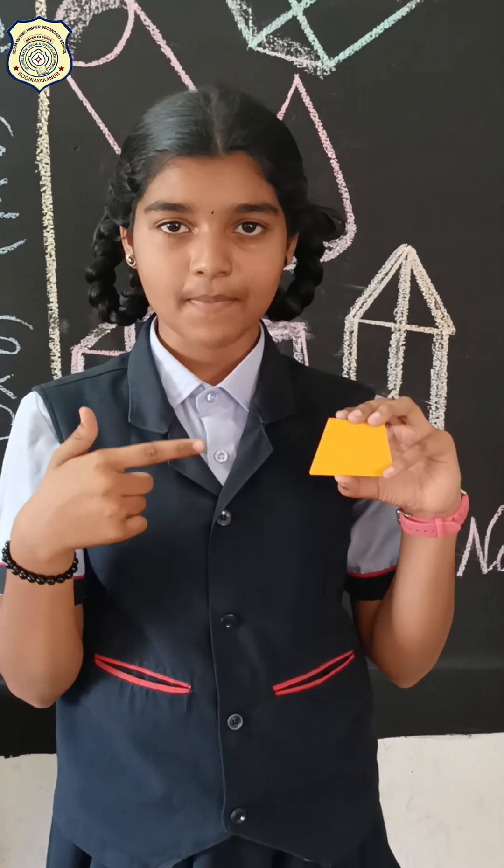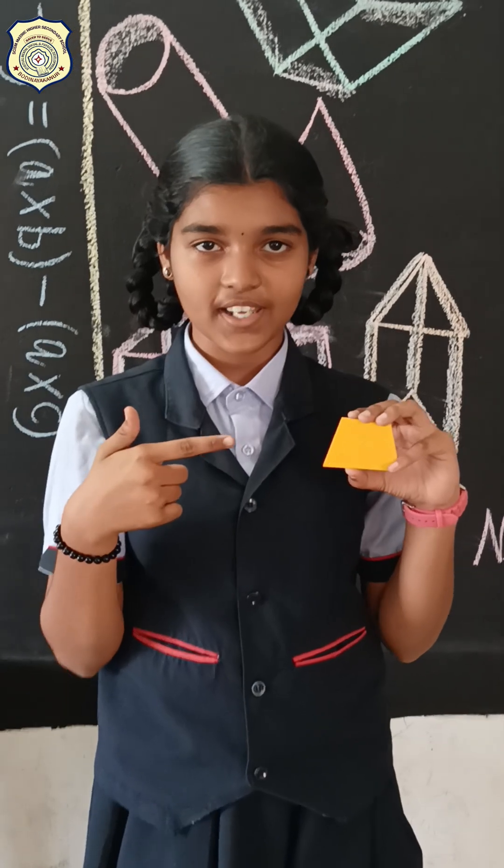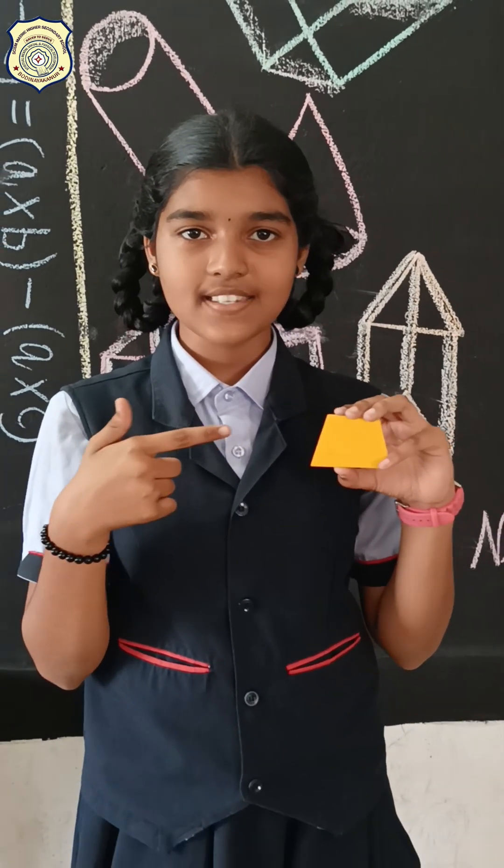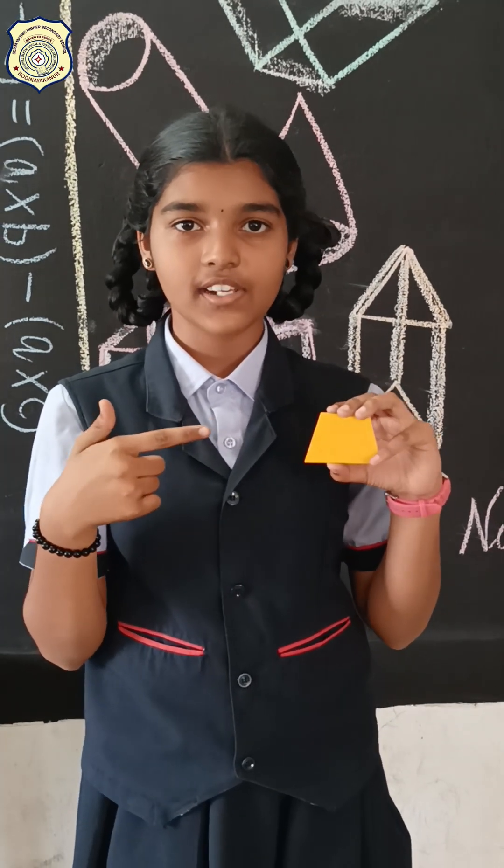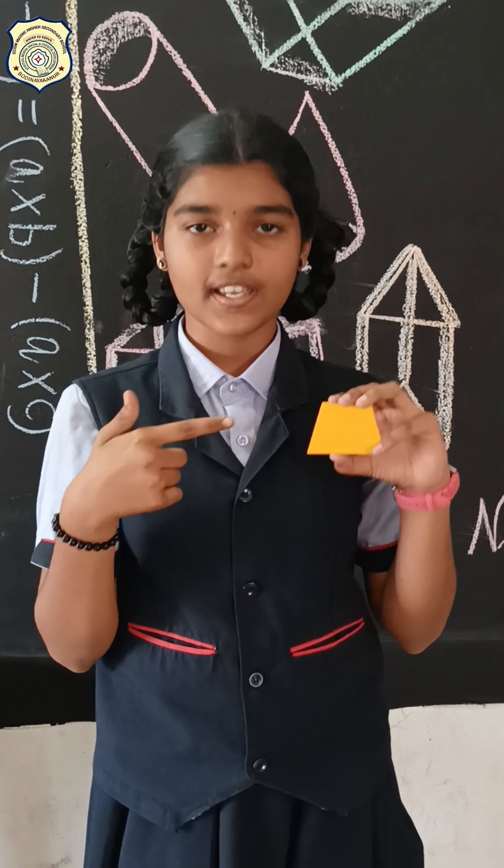This is a trapezium. One pair of opposite sides are parallel. The adjacent interior angle sum is 180 degrees. Diagonals intersect each other. The non-parallel sides are unequal, except in an isosceles trapezium.